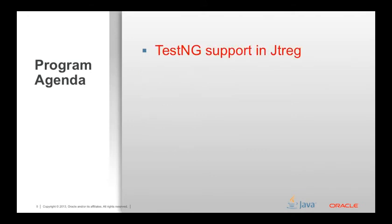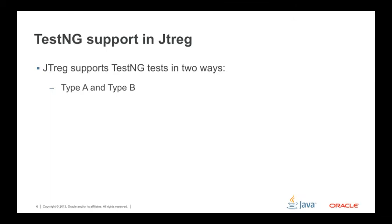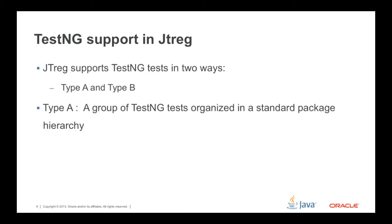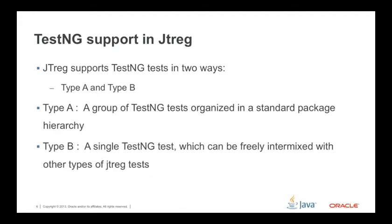JTREG supports TestNG tests in two ways. For convenience, I have named them Type A and Type B. Type A test cases are a group of TestNG tests organized in a standard package hierarchy, which may contain just one test case or many test cases. Type B test cases is a single TestNG test which can be freely intermixed with other types of JTREG tests.